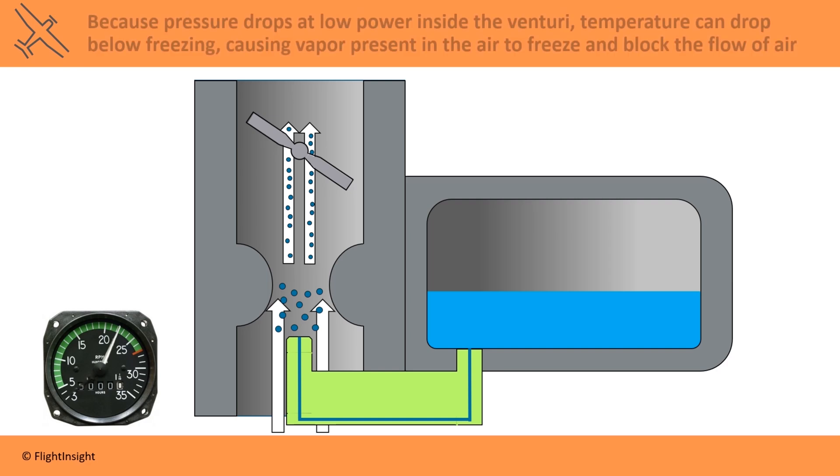Because pressure drops at low power inside the venturi, temperature can also drop below freezing, causing vapor present in the air to freeze and block the flow of air. Temperatures can drop below freezing even if the outside air temperature is as warm as 70 degrees Fahrenheit.